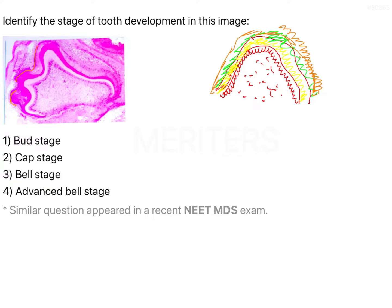So if you can identify, you will see that this is basically a slide of the development of the tooth. You can see the dental papilla which is present in the center, this is the odontoblastic layer, this is the dentine which has been laid down, this very small basophilic layer you see over here is the enamel, and then you have the ameloblasts which are rimming the enamel matrix.